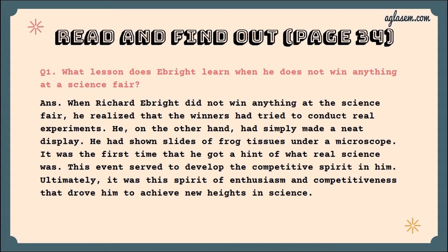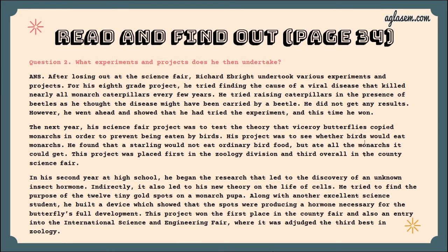Moving to page number 34, question number one: what lesson does Richard learn when he does not win anything at a science fair? When Richard did not win anything at the science fair, he realized that the winners had tried to conduct real experiments. He, on the other hand, had simply made a neat display — he had shown slides of frog tissues under a microscope. It was the first time he got a hint of what real science was, and it served to develop a competitive spirit in him.